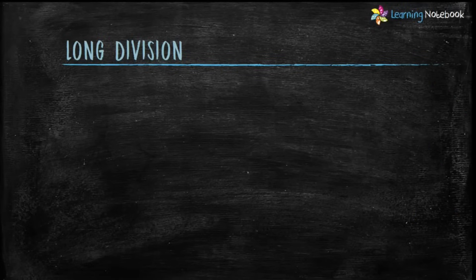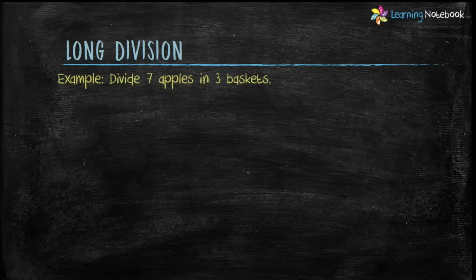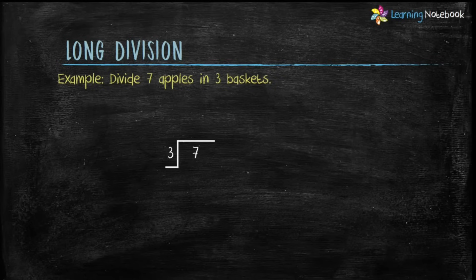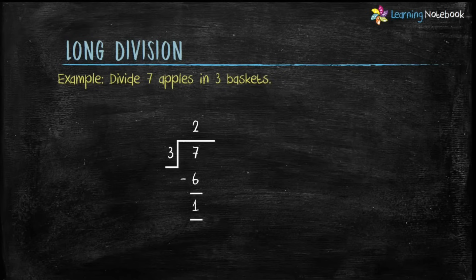Let's understand the same example using the long division method, which will be used throughout in solving division questions. Please listen carefully. The example is to divide 7 apples in 3 baskets. Form a tank as displayed and place the divisor outside the tank and the dividend inside the tank. Step 1: divide 7 by 3. We will use the table of divisor 3. Write the nearest multiple of 3 to the dividend 7, which is 3 × 2 = 6. Write 2 on top as the quotient and 6 below 7. Next, subtract 6 from 7 and we get 1, which is our remainder.